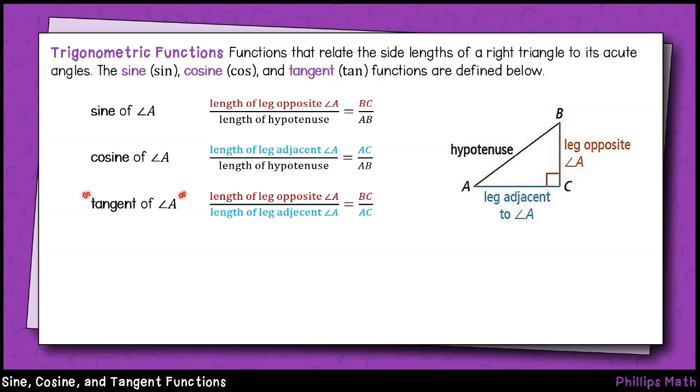Finally, we have the tangent of angle A. That's the ratio between the leg opposite angle A and the leg adjacent to angle A. So that will be line segment BC divided by line segment AC.